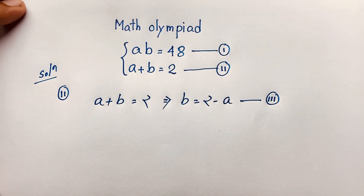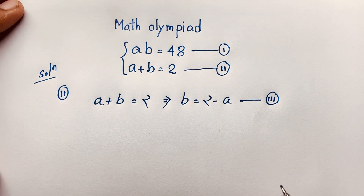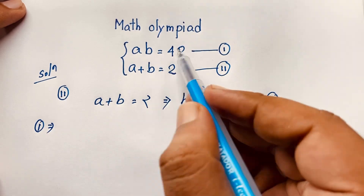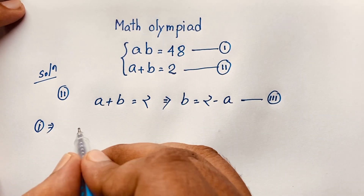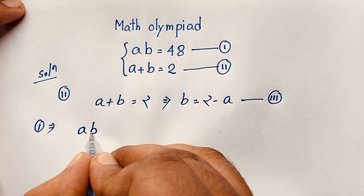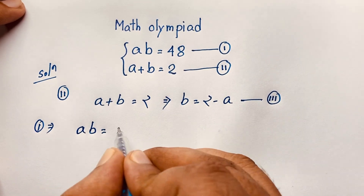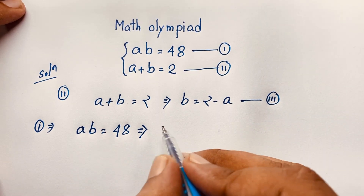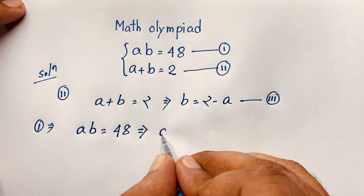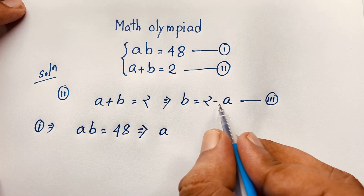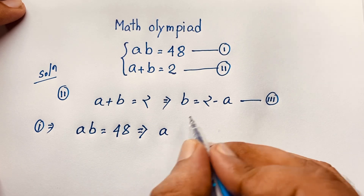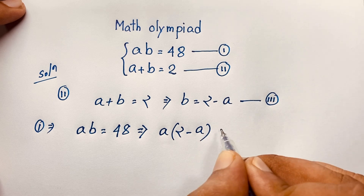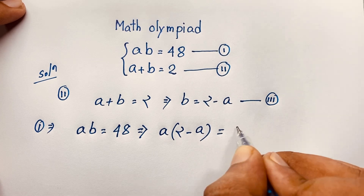Now, our first equation is a times v is equal to 48. I take that equation: av equals 48. Since b equals 2 minus a, I substitute this value in, so a times (2 minus a) is equal to 48.